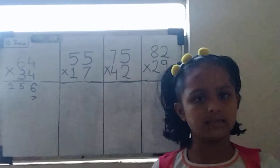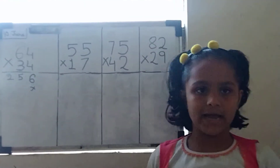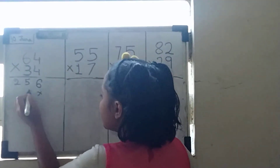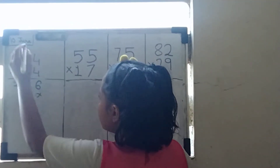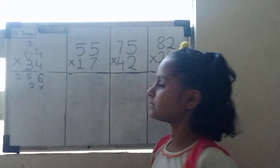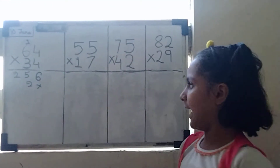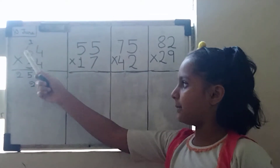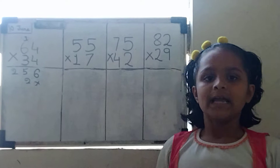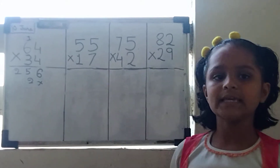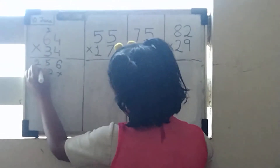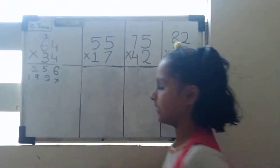Then we will multiply 4 multiplied by 3 equals to 12. Then we will write 2 here and 1 will be carried. Then we will multiply 6 multiplied by 3 equals to 18. Then 18 plus 1 equals to 19. Then we will write 1 here and 1 will be carried.